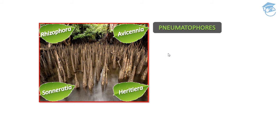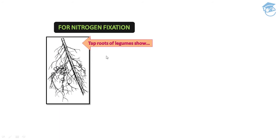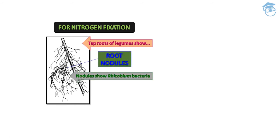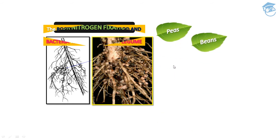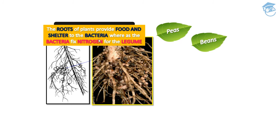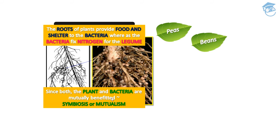Another modification is for nitrogen fixation. The tap roots of leguminous plants show root nodules containing rhizobium bacteria. Rhizobium fixes atmospheric nitrogen. It is seen in pea and beans. The roots of the plant provide food and shelter to the bacteria, while the bacteria fix nitrogen for the legume. Since both plant and bacteria are mutually benefited, this relationship is called symbiosis or mutualism.